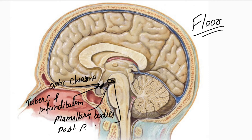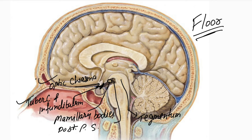Continuing along the floor from anterior to posterior: after the mammillary bodies, we have the posterior perforated substance, which is pierced by the posterior cerebral arteries; and finally, the tegmentum of the midbrain. All these floor structures — optic chiasma, tuber cinereum with infundibulum, mammillary bodies, posterior perforated substance, and tegmentum — are also the contents of the interpeduncular fossa.